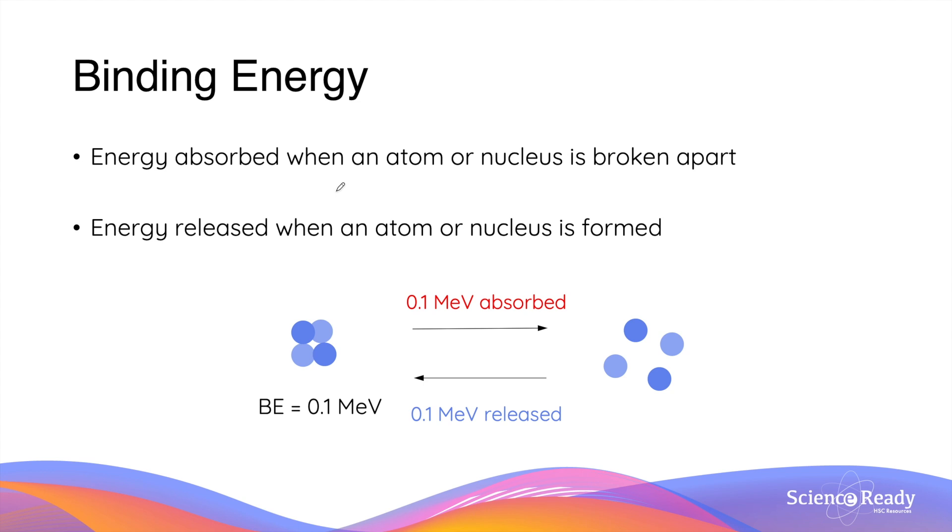Binding energy is the energy absorbed when an atom or nucleus is broken apart. This should make sense because energy is required to break the attractive forces present in an atom. Conversely, binding energy is released when an atom or nucleus is being formed.